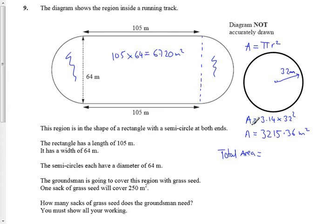So we now have to add those two together, so plus 3215.36, the total area of both bits together, which is 9935.36 meters squared.